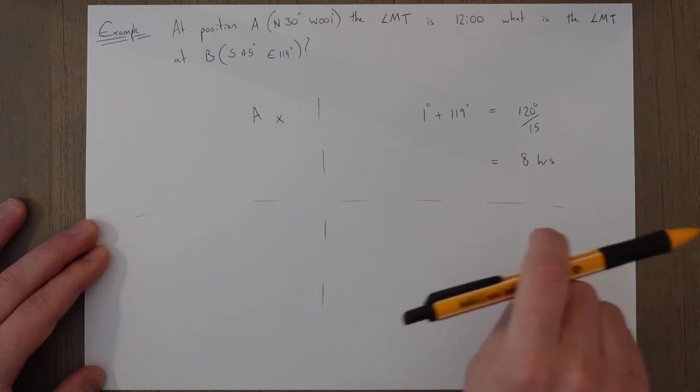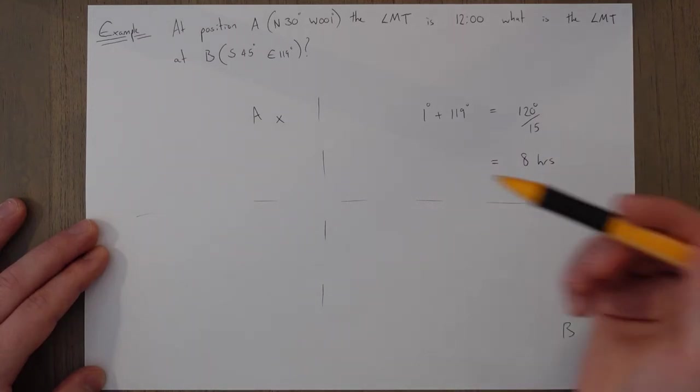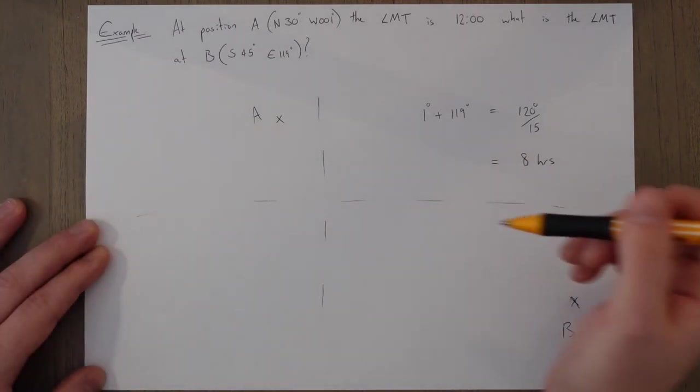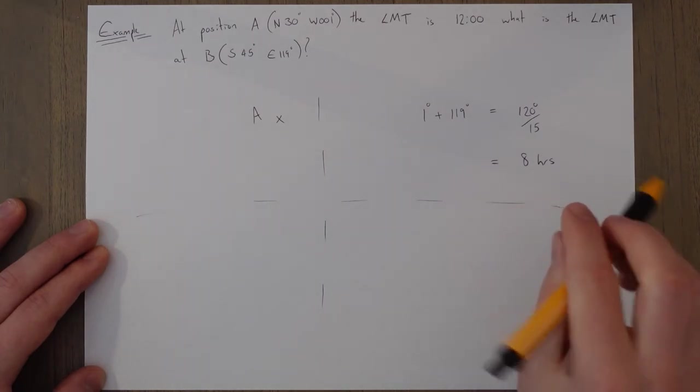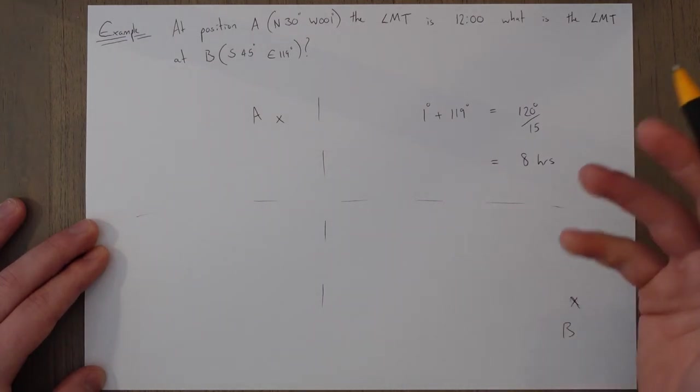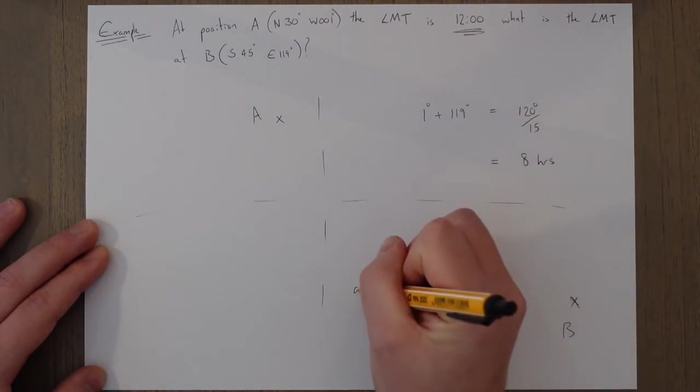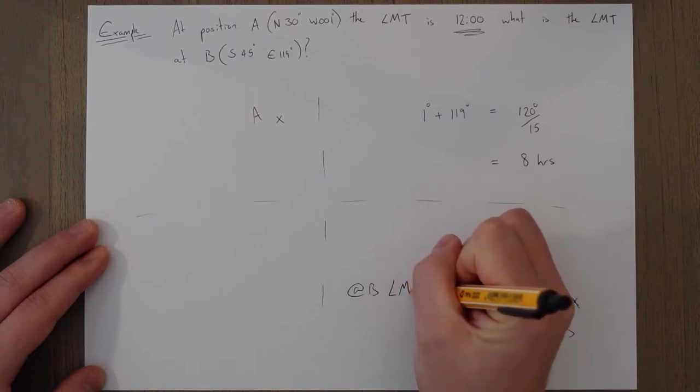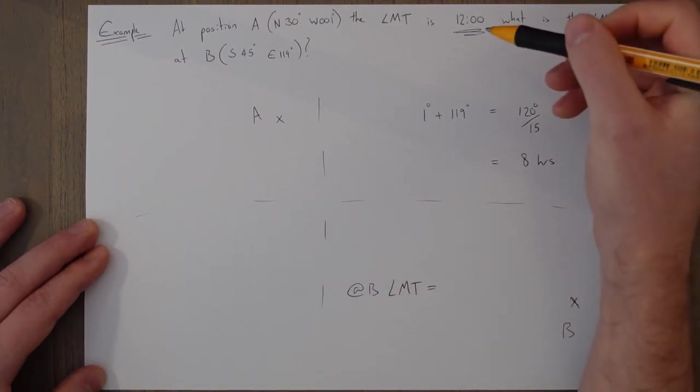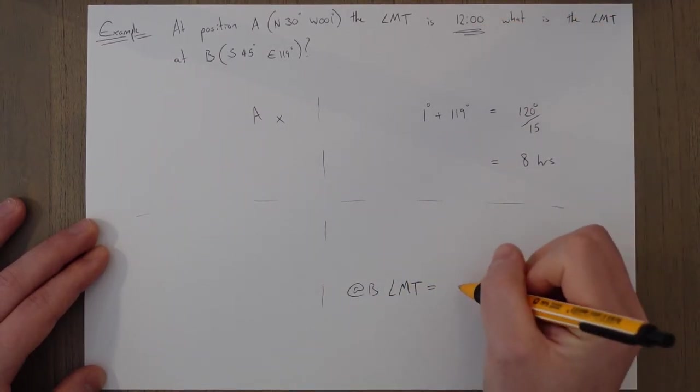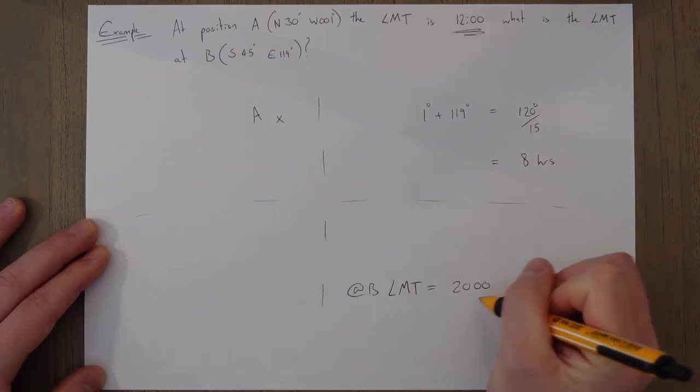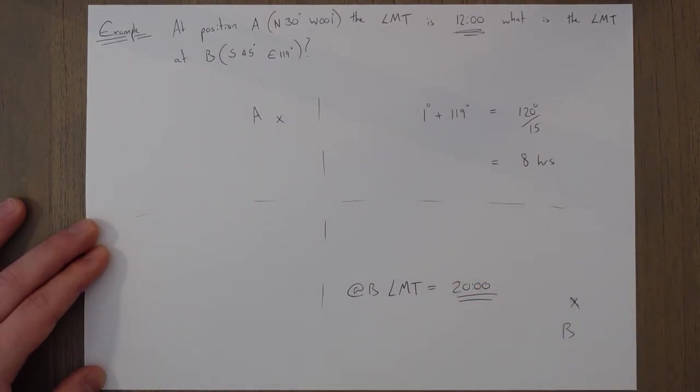So the sun rises in the east and sets in the west. So that means that people living further east see the sunrise earlier than us, and in the west the sun rises later. So B is further to the east. It will already have experienced midday and sunrise, so it's going to be ahead of 12. So at B, the local meridian time is going to be ahead of this by eight hours. That's 8 p.m.